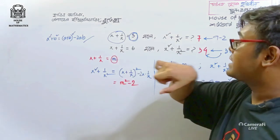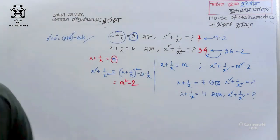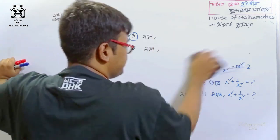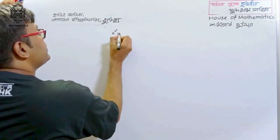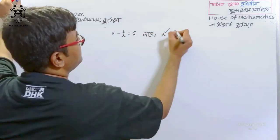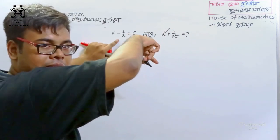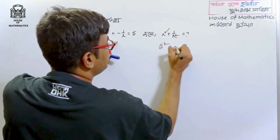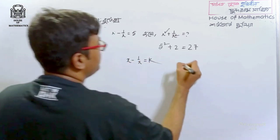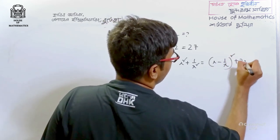If x minus 1 by x is equal to x minus 1 by x, how do I do this? This is the formula. x minus 1 by x is equal to 5. So we have to show this: x squared is equal to x minus 1 by x whole square plus 2x into 1 by x.